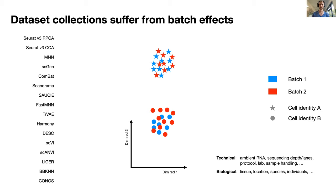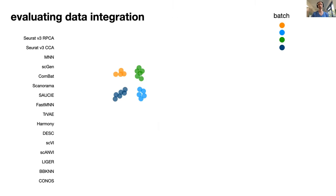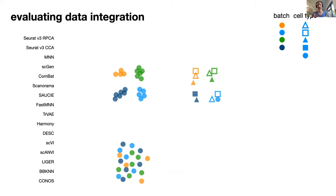So how do we evaluate data integration? Typically, we don't want cells to be separated by batch, but instead we want them to be overlapping across all batches. Single cell datasets don't look like this — they look a little bit more complicated. Typically, you'd have different cell identities, and again, you don't want these to be separated by batch, but instead be separated by cellular identity, and within an identity or within a cell type, to be merged across batches.